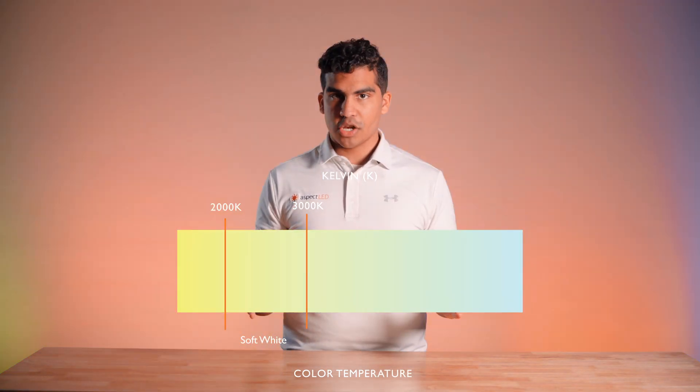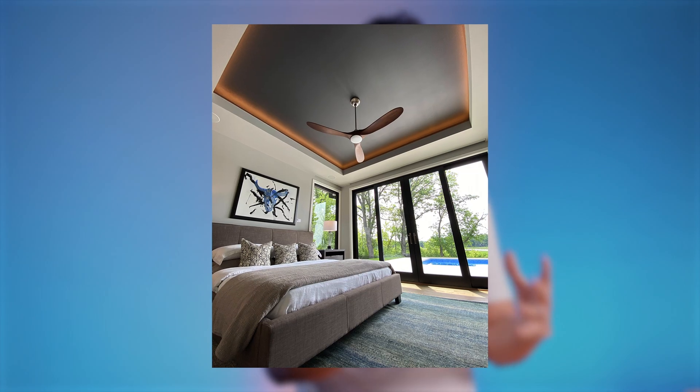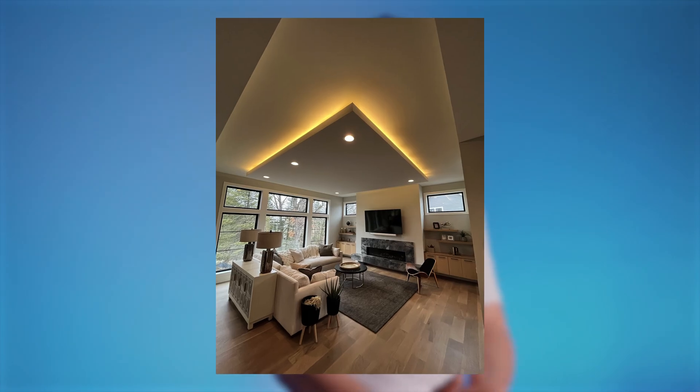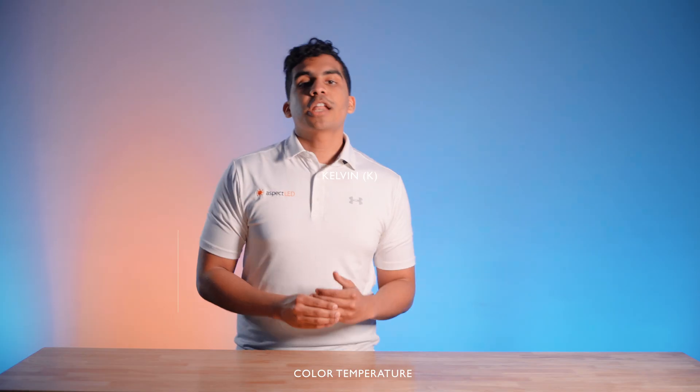Now let's dive into some of the specifics of our Kelvin ratios. So 2000 Kelvin to 3000 Kelvin is going to be your warmest color range. This is perfect for cozy and inviting atmospheres inside your home or maybe even at night.